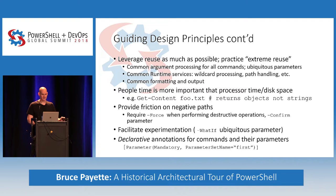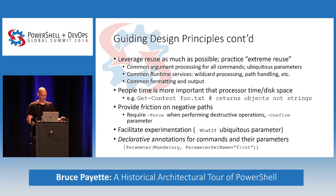We wanted to provide friction on negative paths. To use a probably incorrect analogy, we'll let you shoot yourself in the foot, but we won't hold the gun. So, we have dash-force on destructive operations, the dash-confirm mechanism to confirm operations making significant changes to your system, and aspects of the system that make you think before doing the wrong thing. We wanted to facilitate experimentation — it should be safe to try commands — so we have the -WhatIf ubiquitous parameter. And then we have declarative annotations for commands and their parameters, so the logic for binding parameters and doing checking is done declaratively through attributes rather than everybody writing their own null checks.